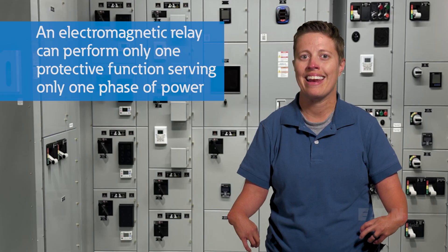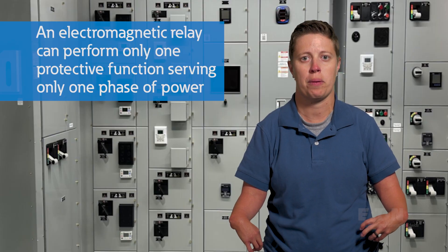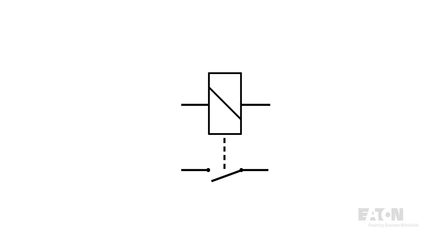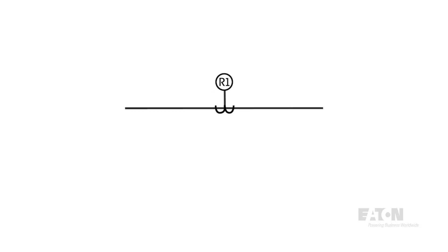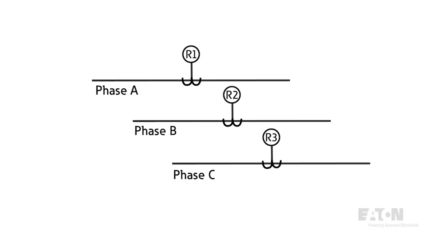An electromechanical relay can only perform one protective function serving only one phase of power. In the example just described, one electromechanical relay would provide time-delay overcurrent protection for one phase of the power system. To provide complete protection to all three phases, two additional relays would be needed for a total of three. If additional protective functions are required, additional relays would be needed.